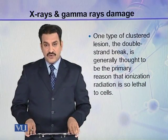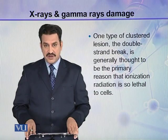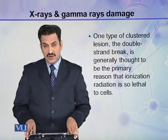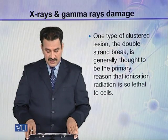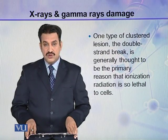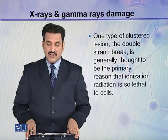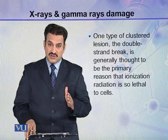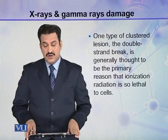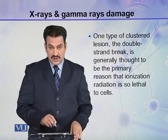One type of clustered lesion — the double strand break — is generally thought to be the primary reason that ionizing radiation is so lethal to cells. As already mentioned, this double strand break is very difficult to repair, and so it becomes lethal to the cells.